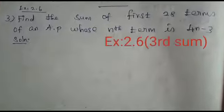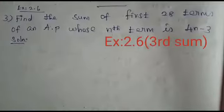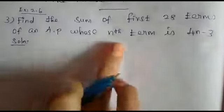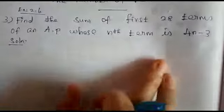Good morning to all. Today exercise 2.6 third sum. Find the sum of first 28 terms of an AP whose nth term is 4n minus 3.